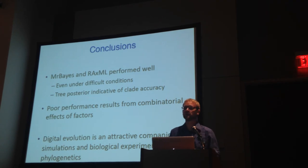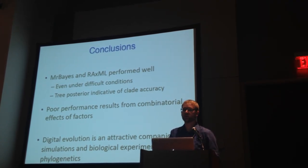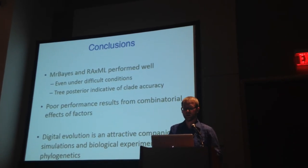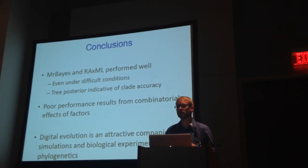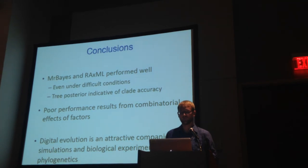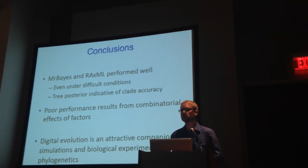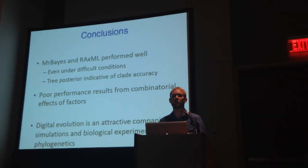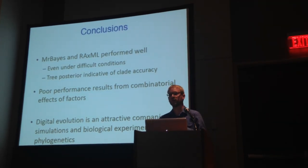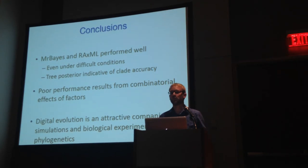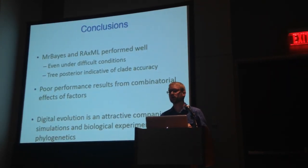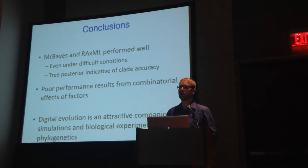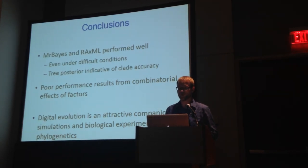Our conclusions: MrBayes and RAxML performed very, very well even under conditions that we think would otherwise be difficult. The tree posterior probability was indicative of clade accuracy for all of our experiments. We found really interesting combinatorial effects when various complex factors are at play, which we can investigate much further. Finally, digital evolution is a very attractive companion to simulations and experimental phylogenetics using a biological system. We can investigate much more — things such as introgression and anything that would contribute to gene tree versus species tree discordance. This is just a very small scratch on the surface.